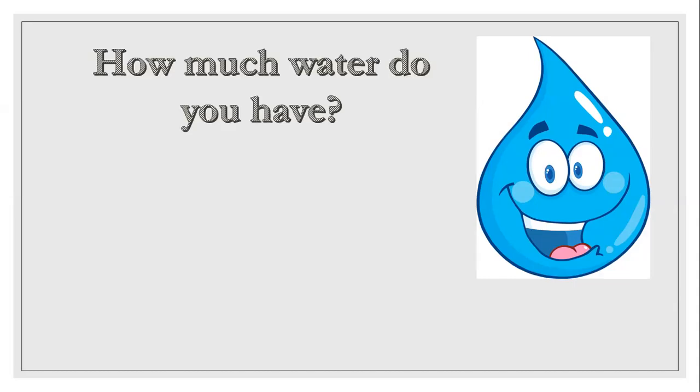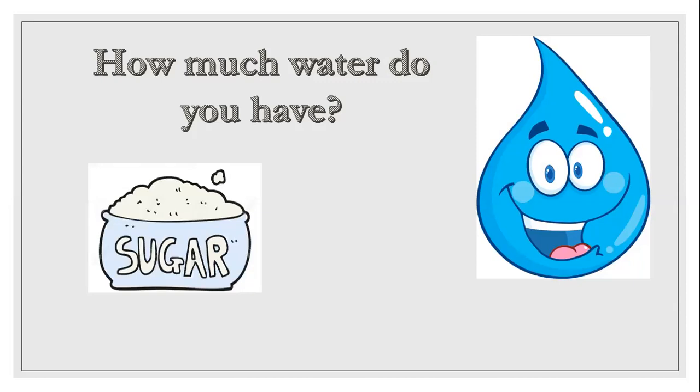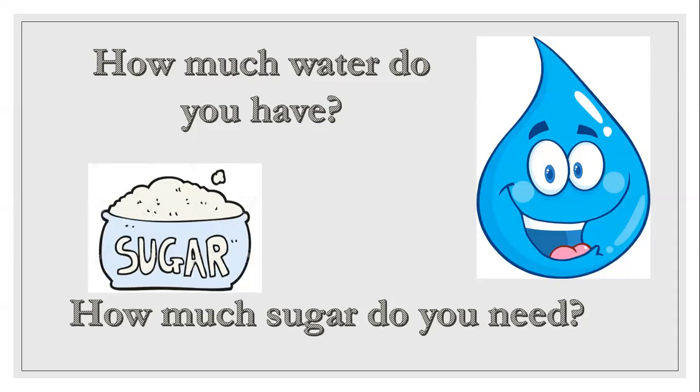Now for uncountable nouns, we have water. Water is not countable, so we use 'how much': How much water do you have? A little, a liter, a gallon. And then sugar: How much sugar do you need? Two spoons of sugar, please — you're giving it a unit. So remember: 'how much' is for uncountable things, and 'how many' is for countable things. To know which is which, ask yourself: can I count it on its own?